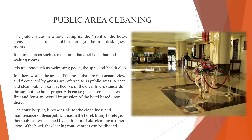The public areas in the hotel comprise the front-of-house areas such as entrance lobbies, lounges, the front desk, and guest rooms. The second category is functional areas such as restaurants and banquet halls. The third is leisure areas such as the swimming pool, spa, and health club. In other words, the areas of the hotel that are constantly in view and frequented by guests are referred to as public areas.